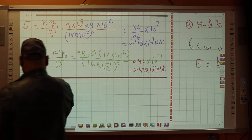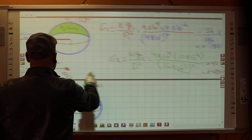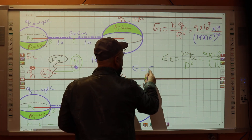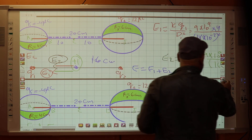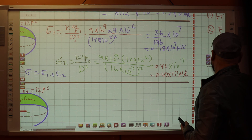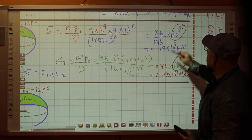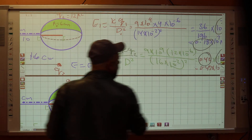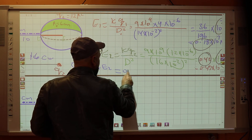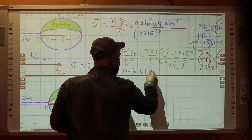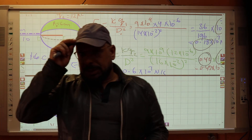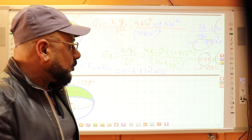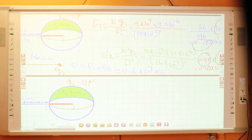Now I have two electric fields pointing in the same direction, so I add them. E total = E1 + E2. Since both have exponent 10 to the 7, I add the coefficients: 0.18 plus 0.42 equals 0.6. So E at C equals 0.6 times 10 to the 7 N/C. Thank you everyone, have a nice day, and see you tomorrow or the day after to finish all the problems.